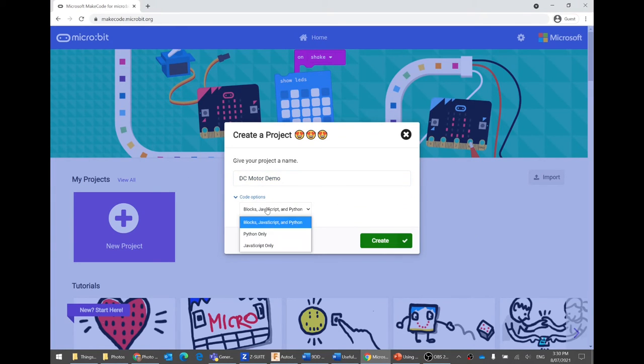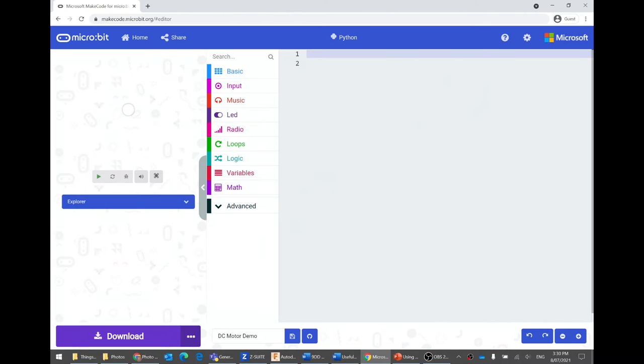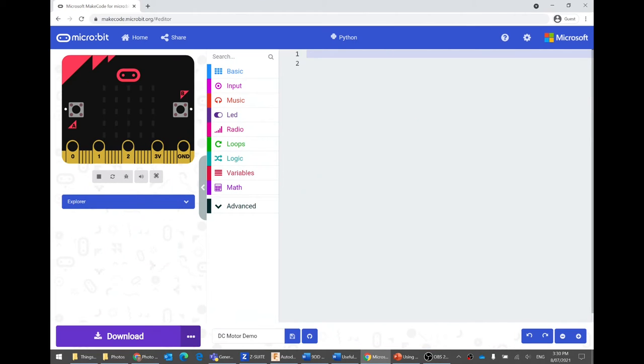Under code options, we're going to be using Python. So you can change this to be a Python only project and then create. Hooray! We have an empty project.